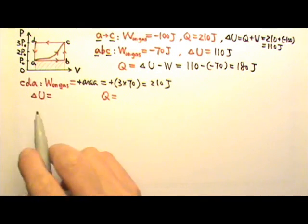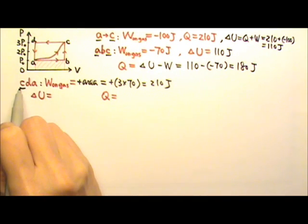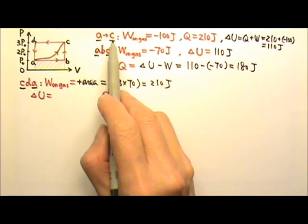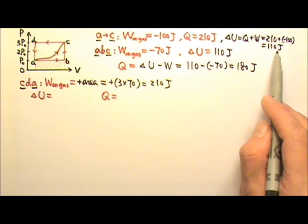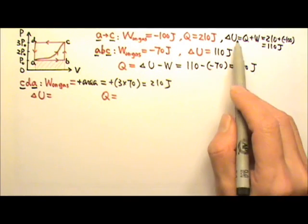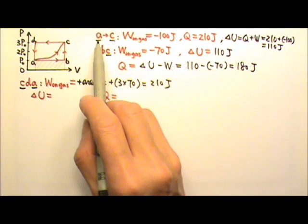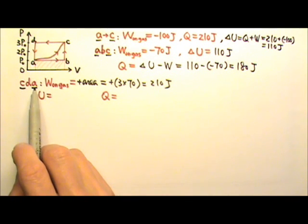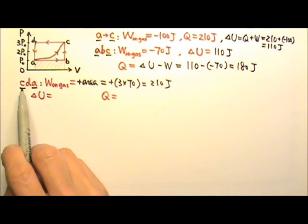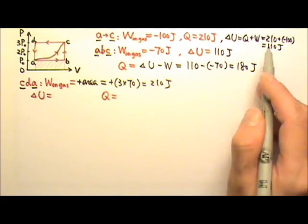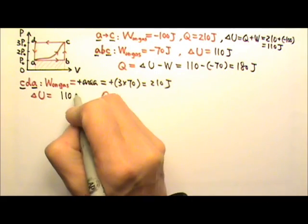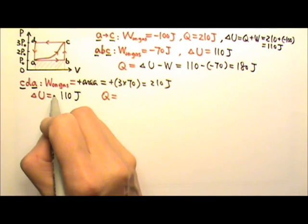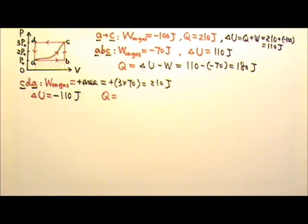Now we need delta U for path CDA. This path starts on C and ends on A. If we go from A to C, delta U is 110. Delta U is final minus initial. Now we switch the final and initial — final is A, initial is C. So delta U will be the same magnitude, 110, but since the final and initial states are switched, delta U is negative 110 joules.